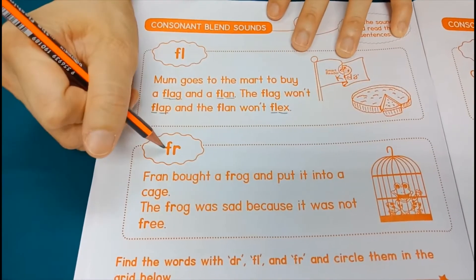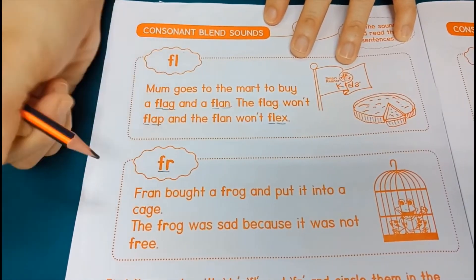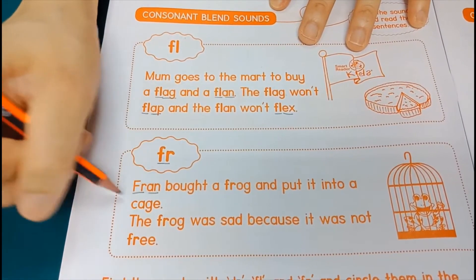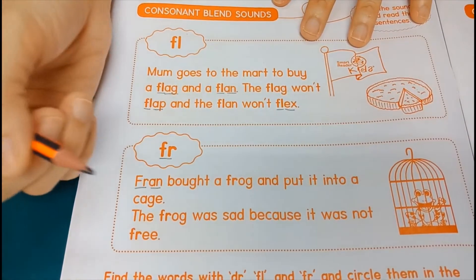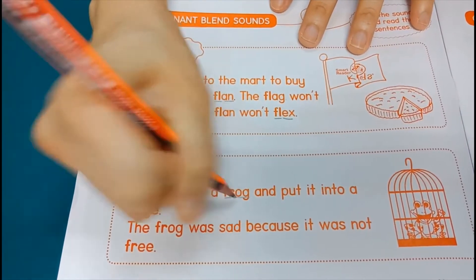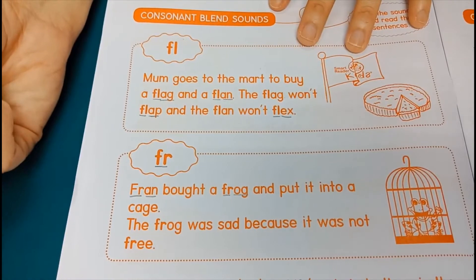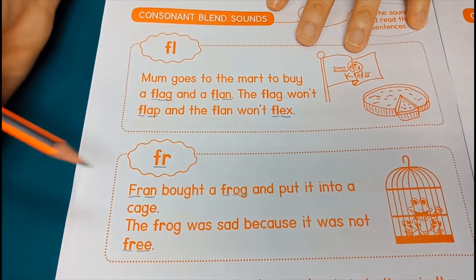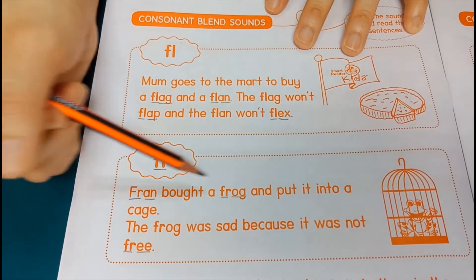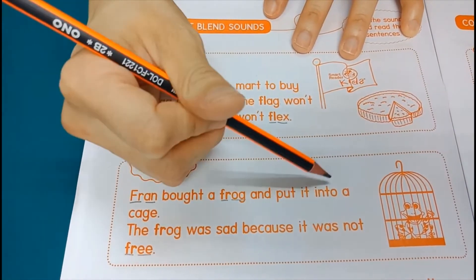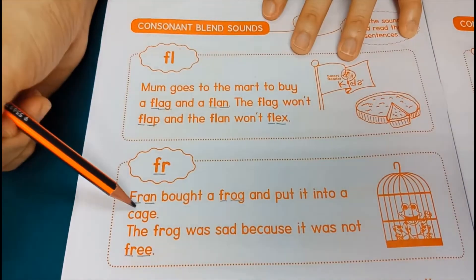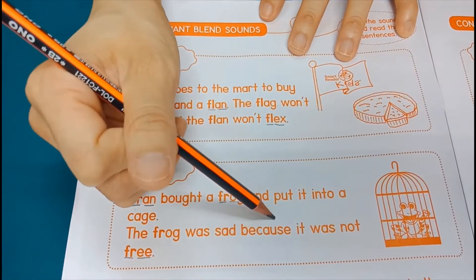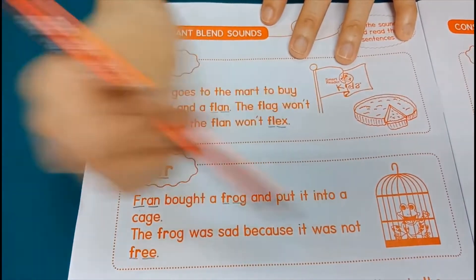Next, we read the FR blend: FR - flan, FR - frog, FR - free. Friend is the name. Let's read: Friend bought a frog and put it into a cage. The frog was sad because it was not free.